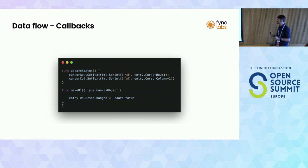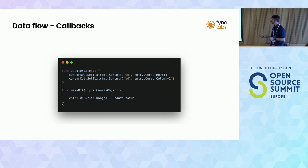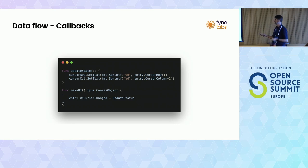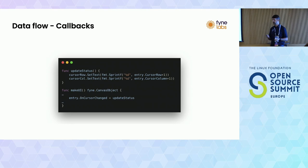Let's wire up the callbacks. We create an update status function that sets the text for the row and column labels, using integer-to-string conversion from cursor properties on the entry. When the user changes their cursor position, there's an on cursor changed callback. Many widgets have 'on something' callbacks where you can set functions to be executed when events occur. All of this is completely thread safe - you haven't had to think about threading once, and you can add your own background handling alongside the user interface.